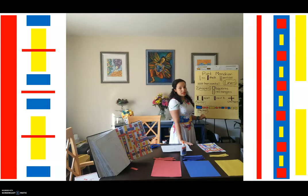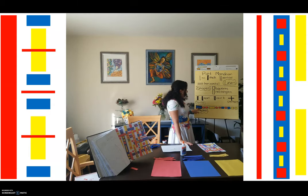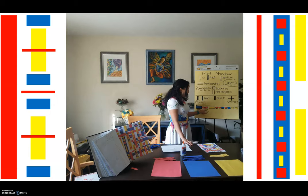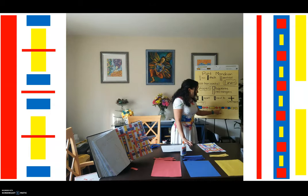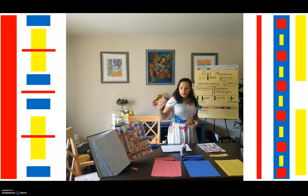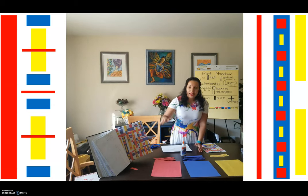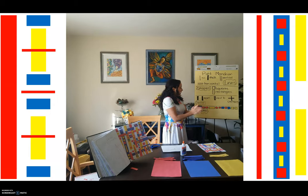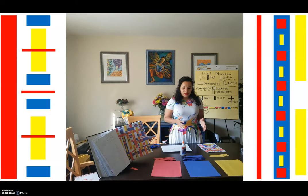There's also rhythm in his paintings. Like in music, we can read this like a sheet of music. We have a big rectangle — blue — followed by two squares. So if we're going to read this like music, we can go: blue, red, red, yellow, red, red, blue, red, blue, yellow, yellow. So there are some beats to this painting.